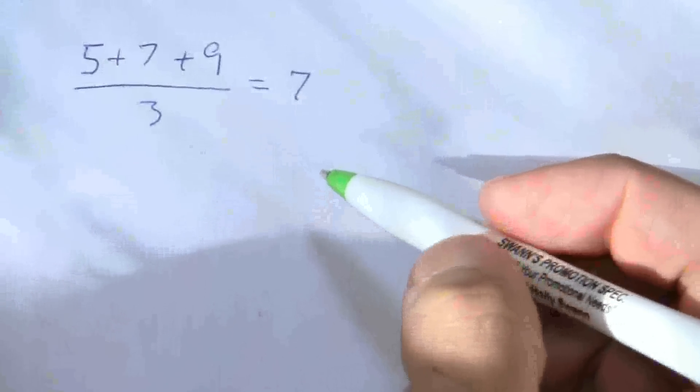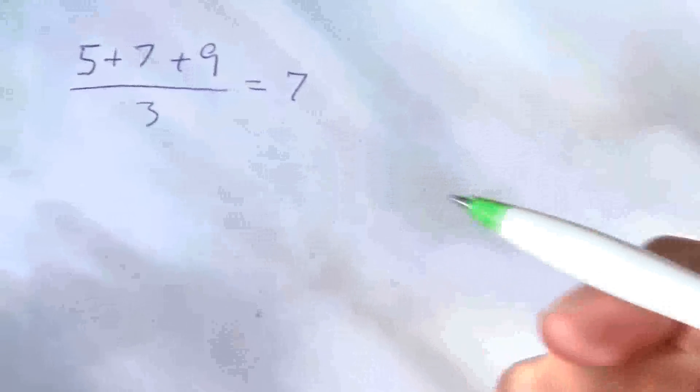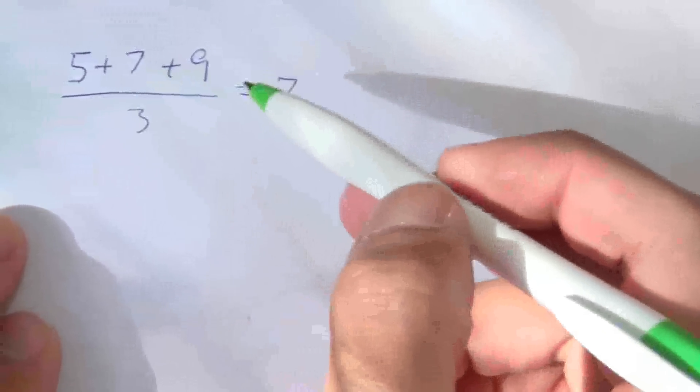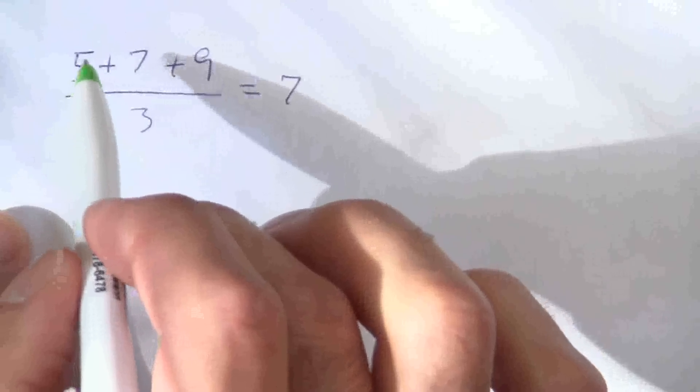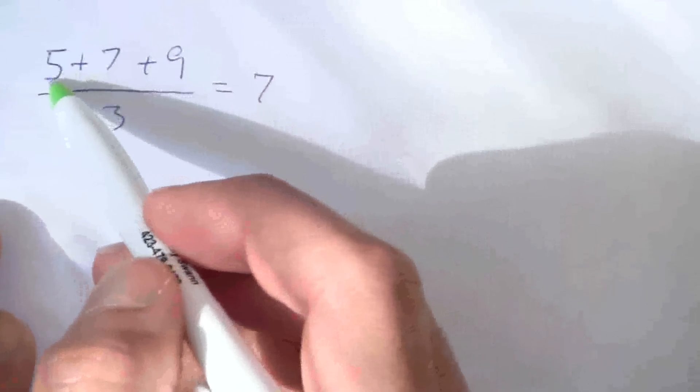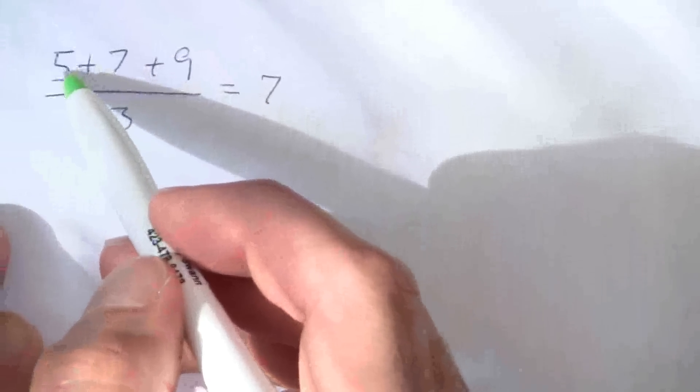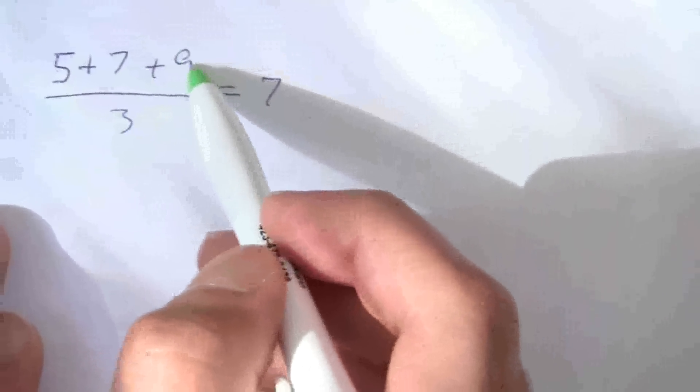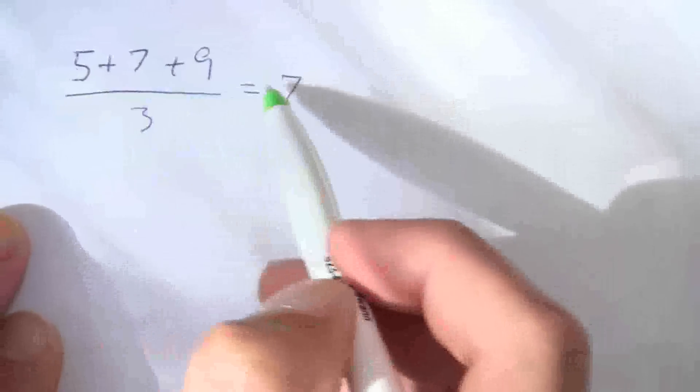So a weighted average is the same sort of thing except instead of taking each number, you can think of this as a third of my numbers is 5, a third is 7, and a third is 9.